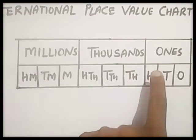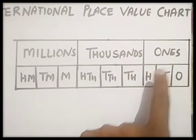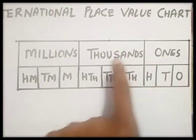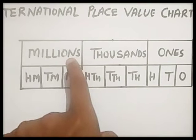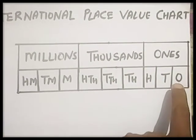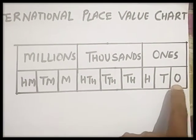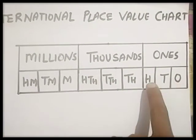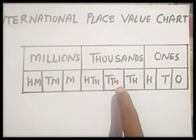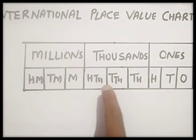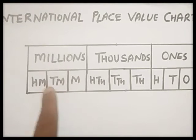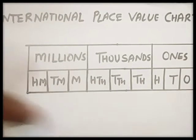There are 3 blocks: ones, thousands, and millions. In the ones block, there are 3 small places: ones, tens, hundreds. In the thousands block: thousands, ten thousands, and hundred thousands. In the millions block: millions, ten millions, and hundred millions.